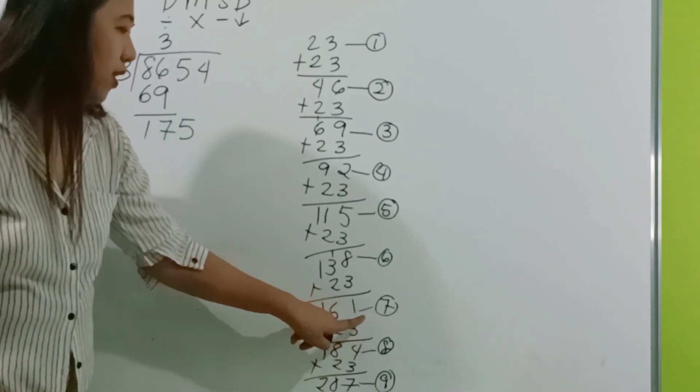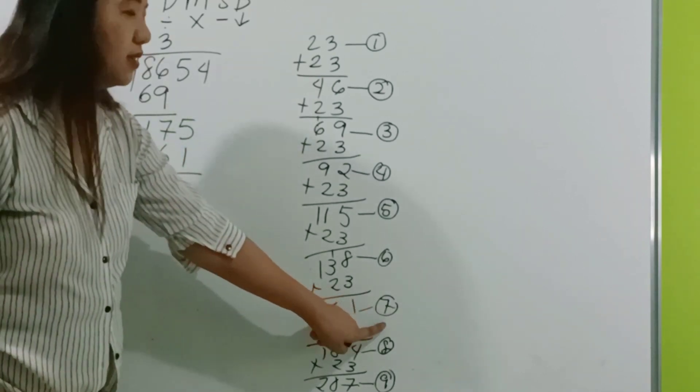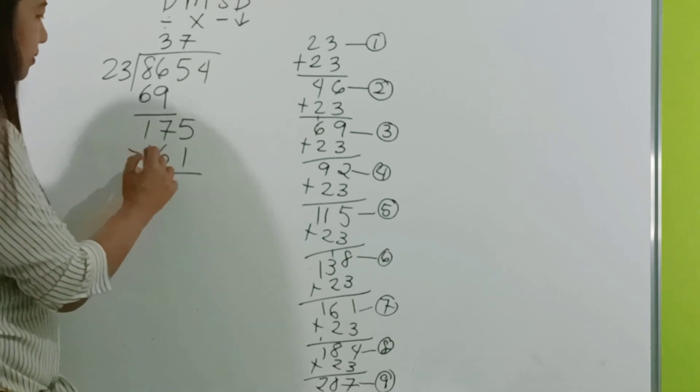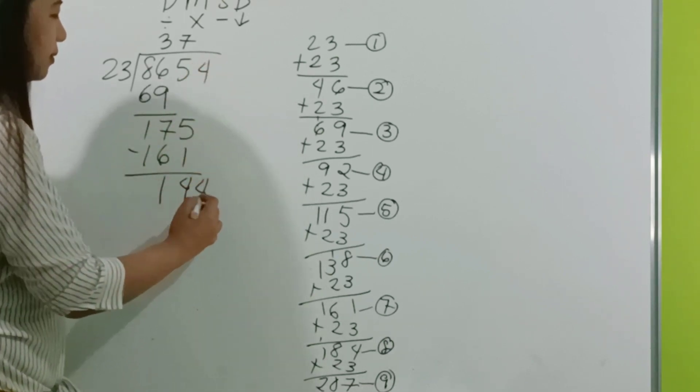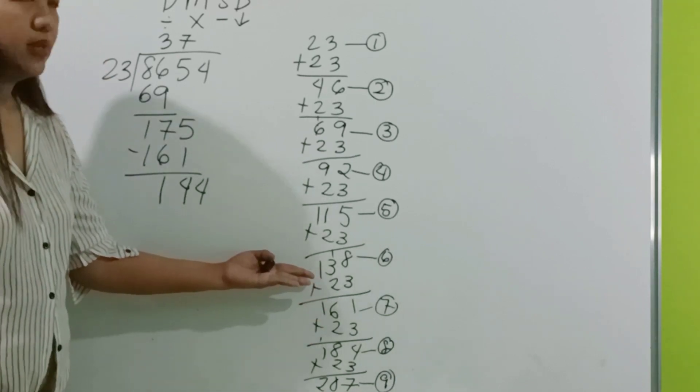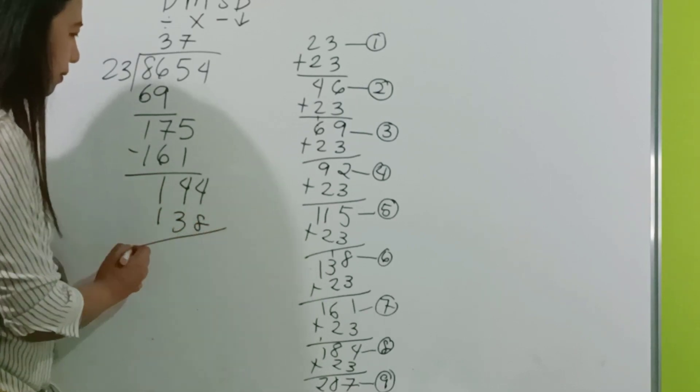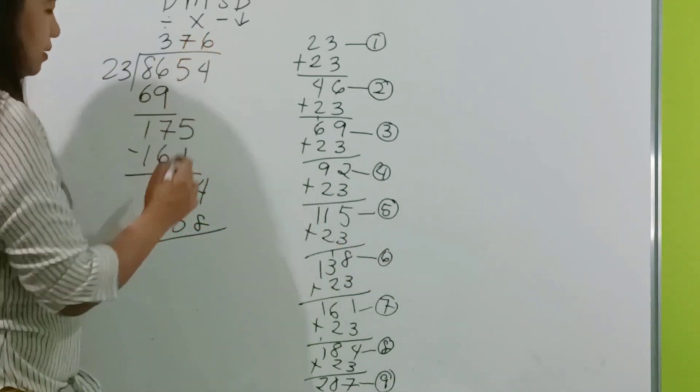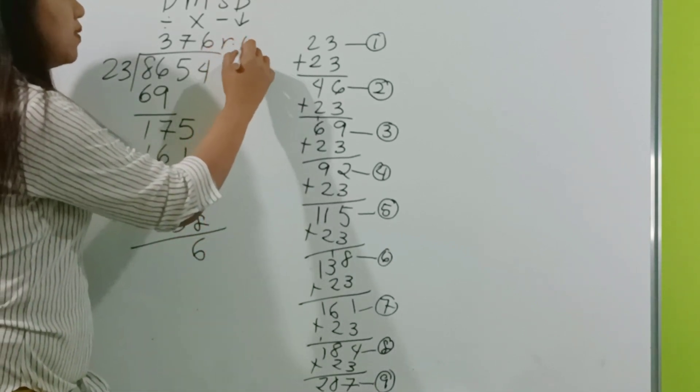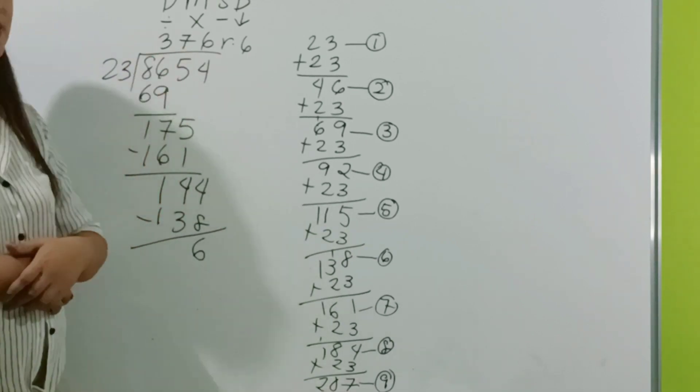So, the thing that you only do is to copy 69 and then copy also the number 3. Next, subtract. So, we have 7 and then 1, bring down 5. Again, you have to look into the numbers, which is less than or equal to 175. The number should be 7, 161. So, just copy 161 and then the number beside it, 7. Proceed to subtraction 4, 1, bring down. For the last time, let's look into our list again. 144 less than 138. So, we just copy 138 and then copy 6. So, subtract. 144 minus 138 is 6. So, did we arrive with the same number? Yes. We have the same answer as before. 376 remainder 6.